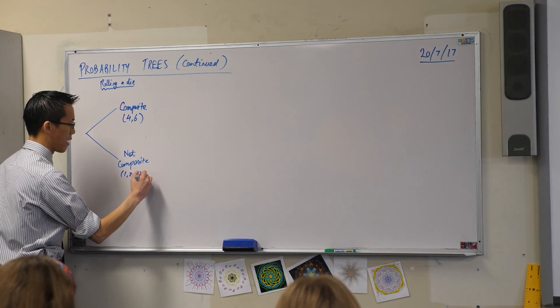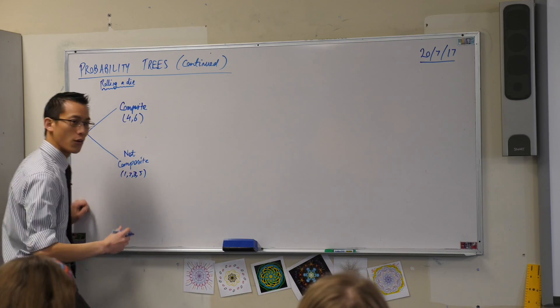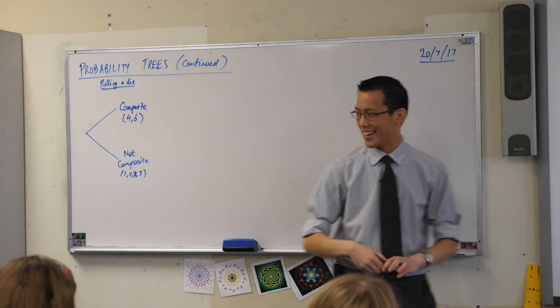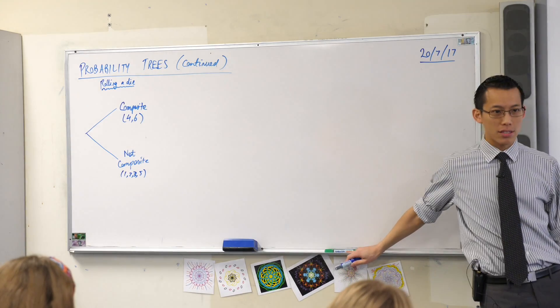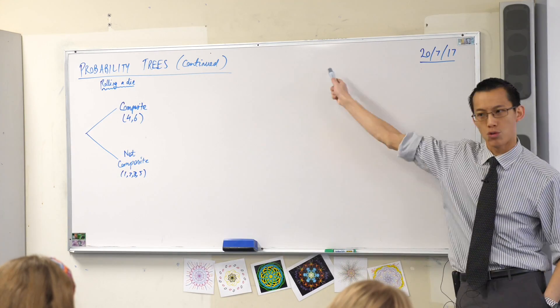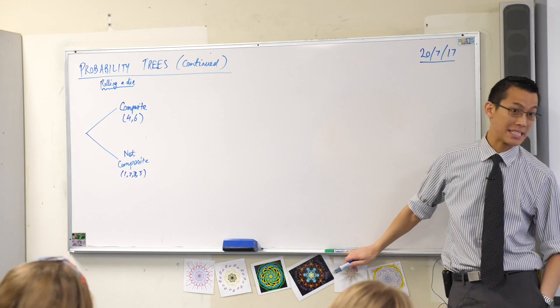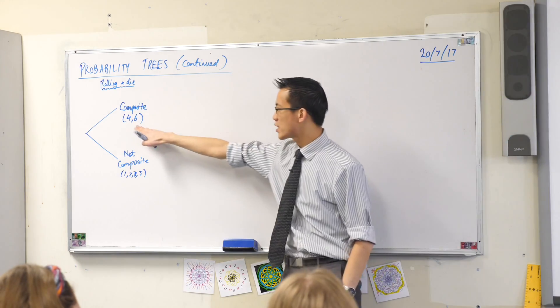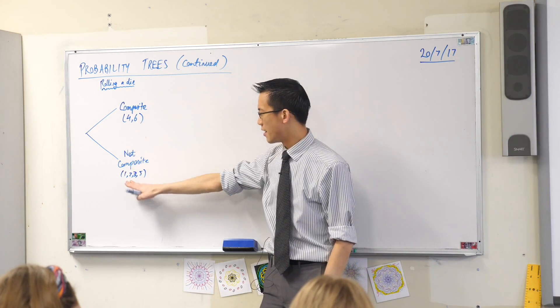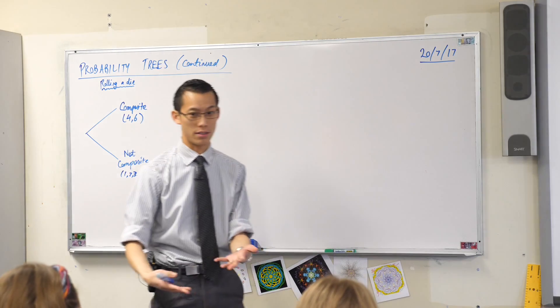So one, two, three, and five. So now you can see the probabilities on these branches are not the same. As opposed to if I just drawn out all six, they would all be a sixth. Look, when you have a look at the probability of each one, there are less favourable events here than there are here, so clearly the chances are different.